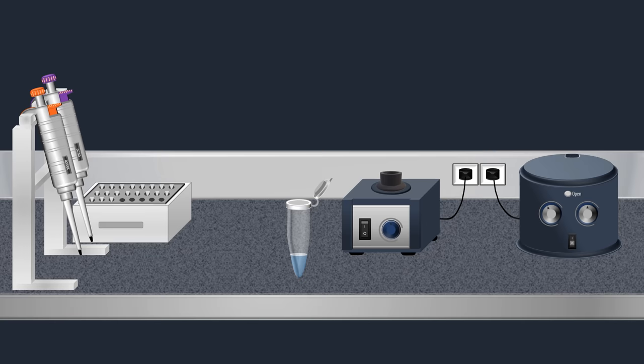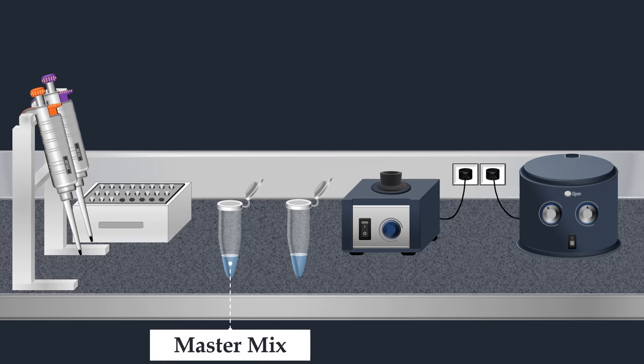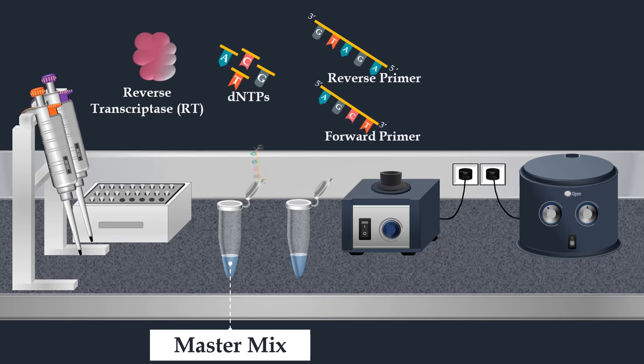After the extraction of the viral RNA, the next step is the preparation of the reaction mixture for PCR amplification. In this step, a master mix is used which is a pre-mixed concentrated solution that consists of buffer, reverse transcriptase enzyme, nucleotides, forward primer, reverse primer, Taqman probe, and DNA polymerase.